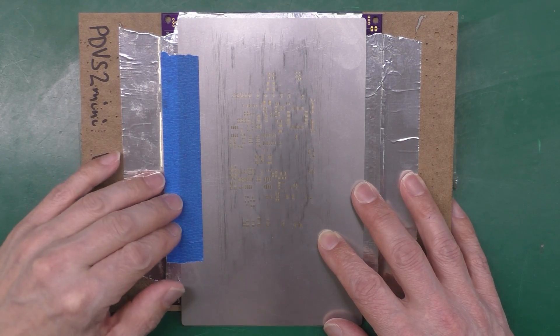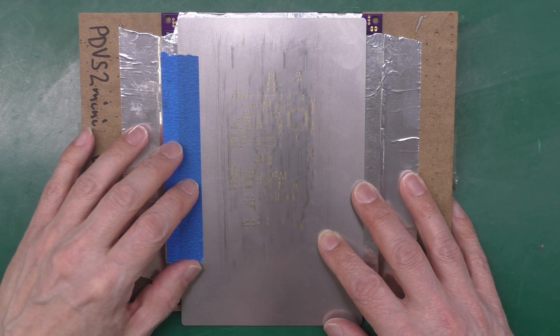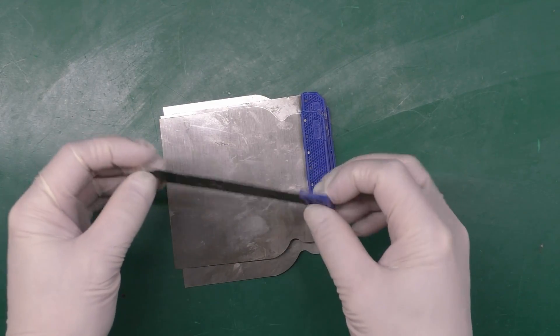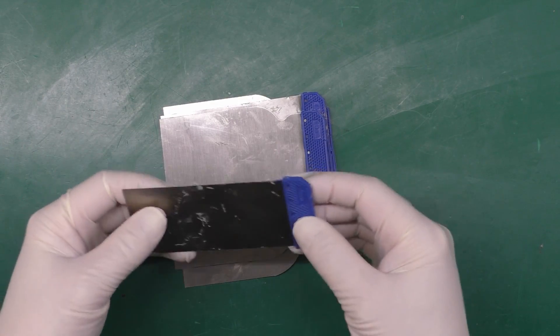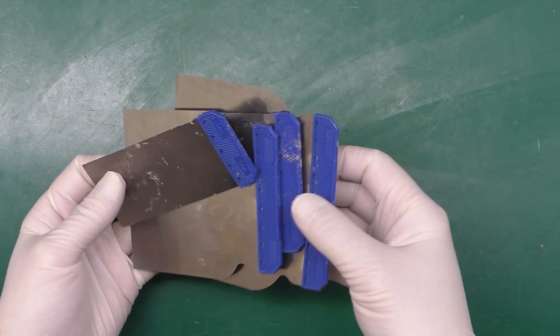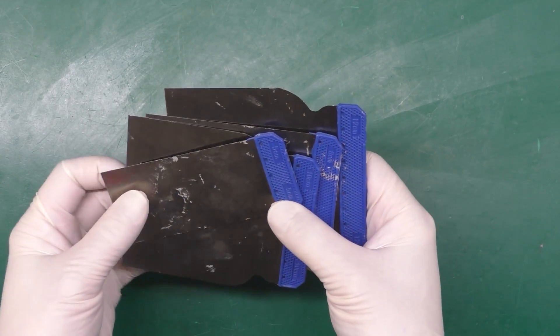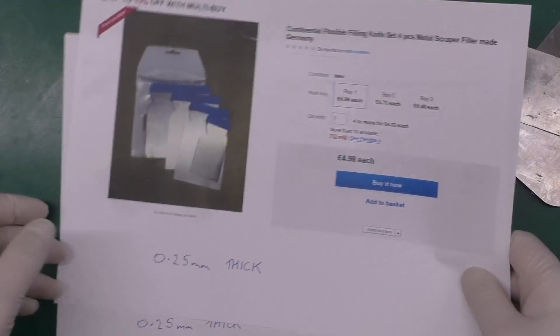So there we go, stencil and tape in place there. We're ready to start pasting. I use these flexible filling knives bought off eBay and they're absolutely perfect for the job here. You can see they've been used a number of times, they're still quite dirty with paste, and I've got a couple examples here of where I got them from.